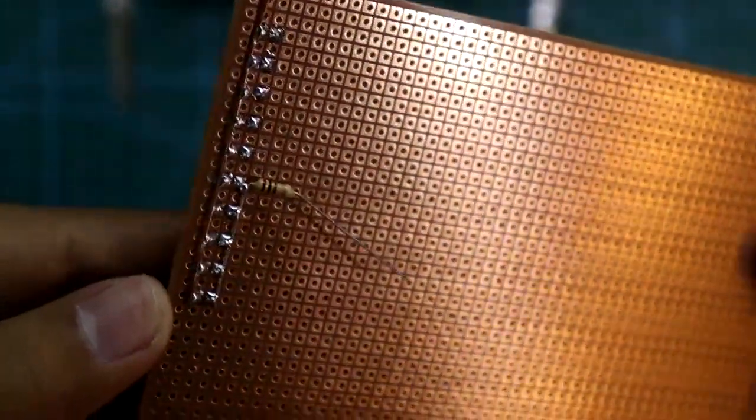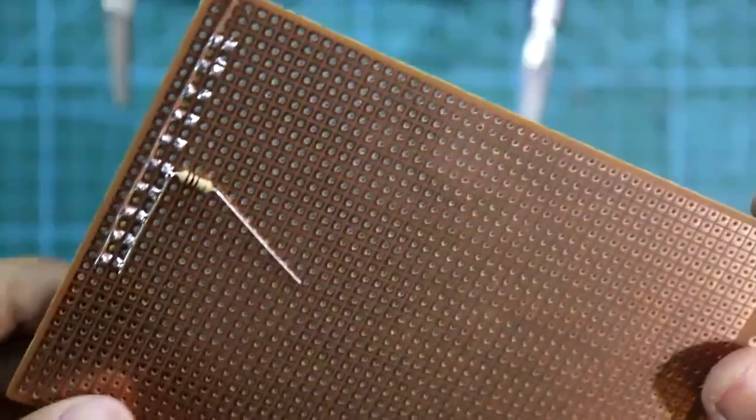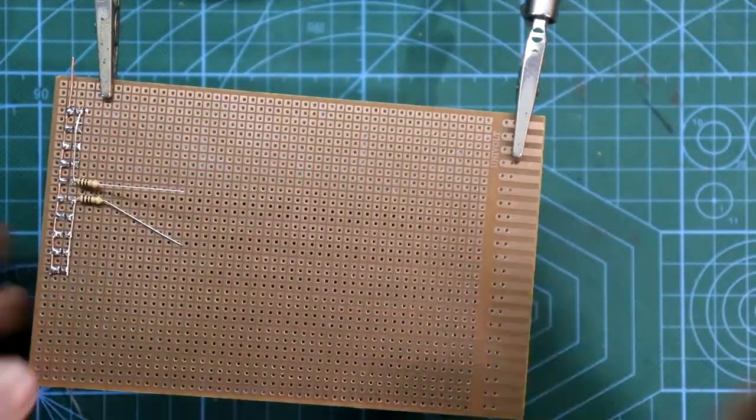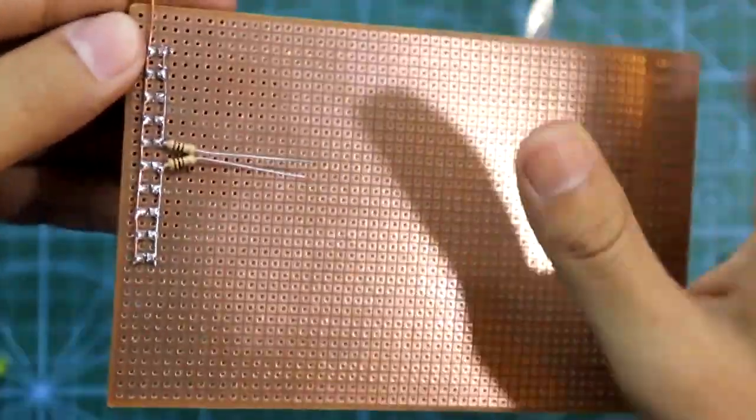So in this way I have connected the 100 ohms resistor. Now we have to connect the other one. So this one also connected. Now we have to connect both the resistor.